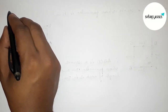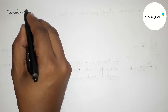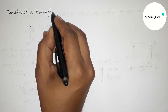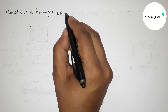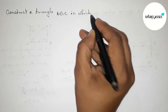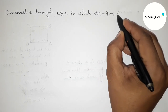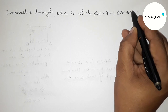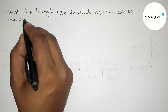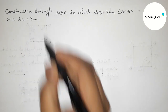Hi everyone, welcome to SI Share Classes. Today in this video we have to construct a triangle ABC in which AB equals 4 centimeters, angle A equals 60 degrees, and AC equals 3 centimeters. Please watch the video till the end. Let's start the video.